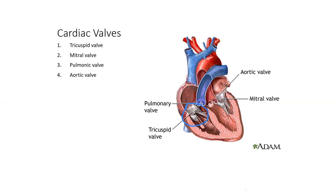When the ventricle contracts, it normally pushes the blood out to the pulmonary artery. When the ventricle contracts, the tricuspid valve closes. Contraction is systolic. So know that relaxation is diastolic and contraction is systolic.